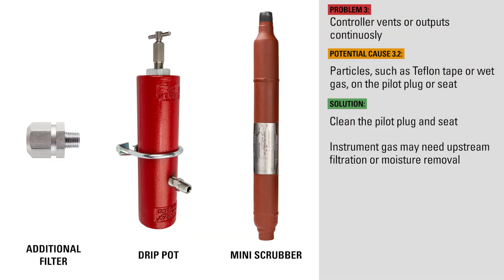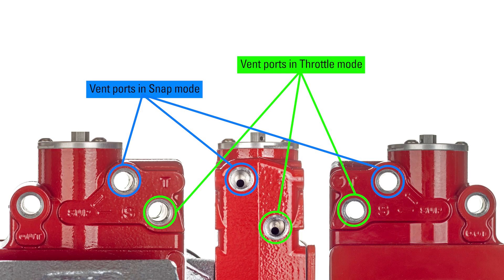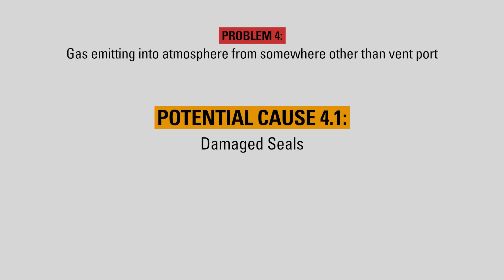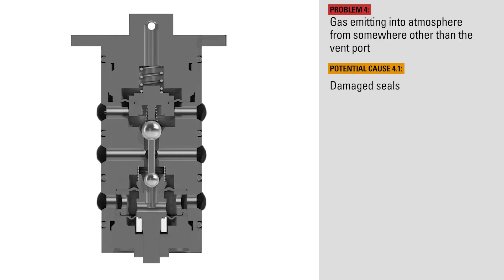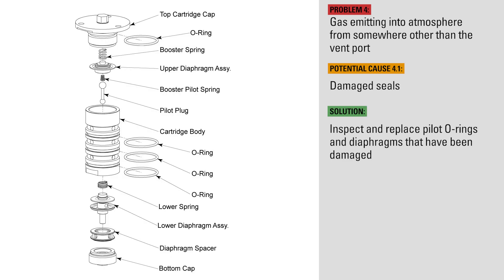In the Gen 3, the only gas that should ever be emitting is through the vent port if it's set up to vent to atmosphere, or no emissions at all if you have it set up to capture vent gas. If your Gen 3 is emitting gas from somewhere other than the vent port, like out of the bottom of the pilot or out the breather hole in the top of the pilot, it's likely an indication that the o-rings or diaphragms in the pilot have been damaged. Inspect the pilot o-rings and diaphragms and replace if necessary.